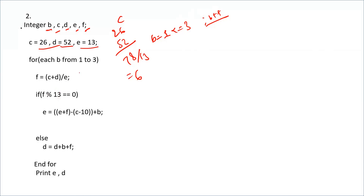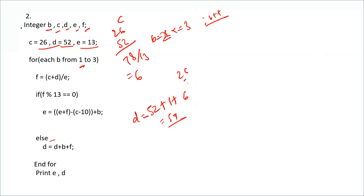Now we check if f mod 13 equals 0. f is 6, and 6 mod 13 is not 0, so the else part executes. In the else part, d is updated: d equals 52 plus b (which is 1) plus f (which is 6), giving d equals 59. Now b becomes 2, and 2 is less than or equal to 3, so we continue.